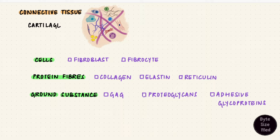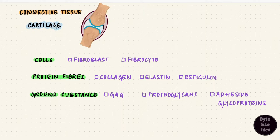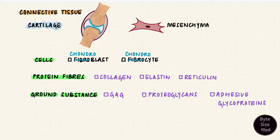Since cartilage is connective tissue, it would thus also have cells, fibers, and ground substance, but with some special features. The cells of cartilage are the chondroblasts and chondrocytes. And just like all connective tissue cells, they form from the mesenchymal stem cells.